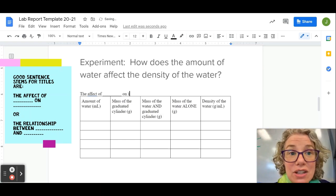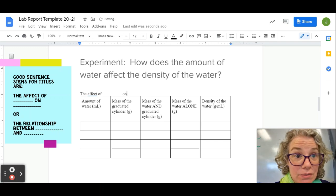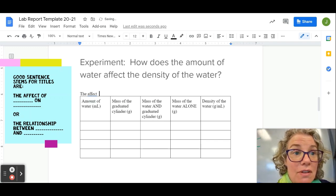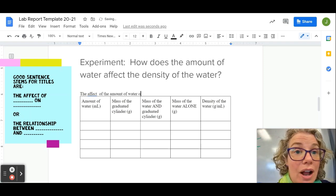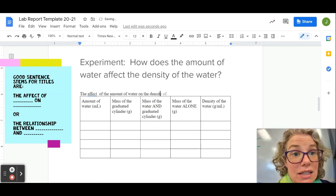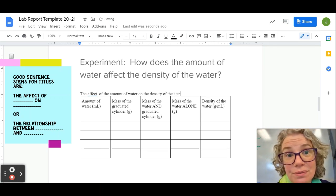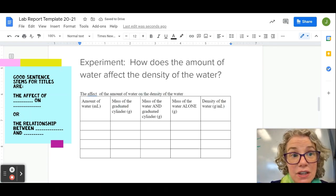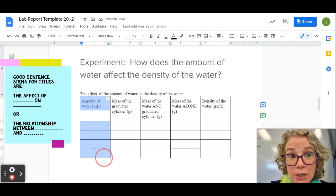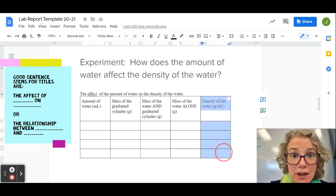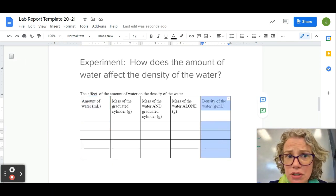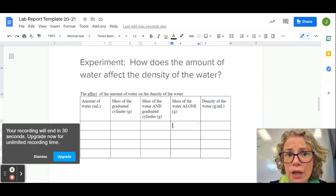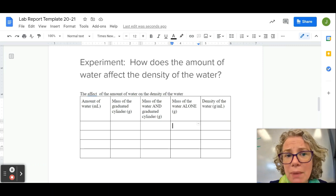Where the blanks are the independent and dependent variable. So the effect of the amount of water on the density of the water. You can see that as long as you start with your independent variable here and your dependent variable there, and then you start brainstorming what else might I need to record, then you will know how many other columns to insert into your data table.